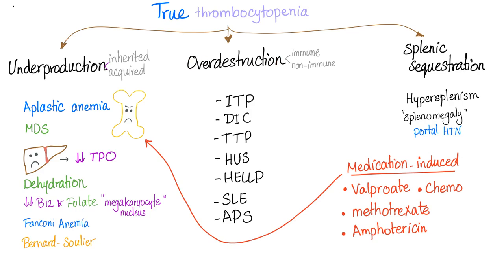Overdestruction is either immune or non-immune, such as immune thrombocytopenic purpura, disseminated intravascular coagulopathy, thrombotic thrombocytopenic purpura, hemolytic uremic syndrome, HELLP syndrome — which stands for hemolysis, elevated liver enzymes, and low platelets — systemic lupus erythematosus, and antiphospholipid antibody syndrome.